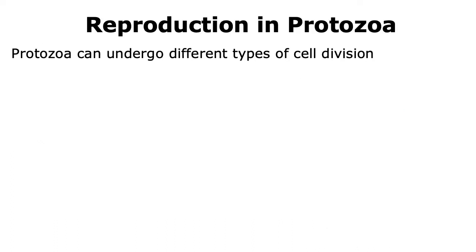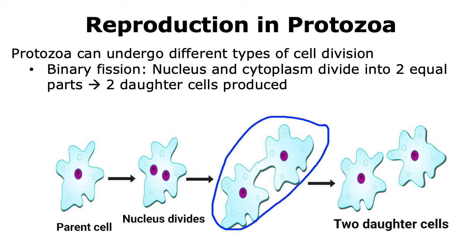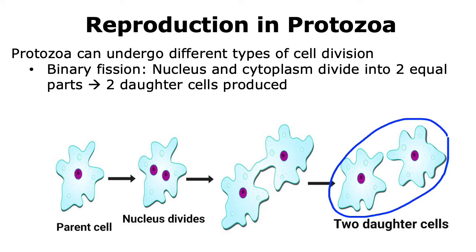Protozoa can undergo reproduction in different ways. One of the most common ways by which protozoa reproduce is binary fission. Binary fission is a type of cell division where first the genetic material of the parent cell is replicated. Once the genetic material is replicated, the cytoplasm is then divided, and you end up with two daughter cells that are equal in size.